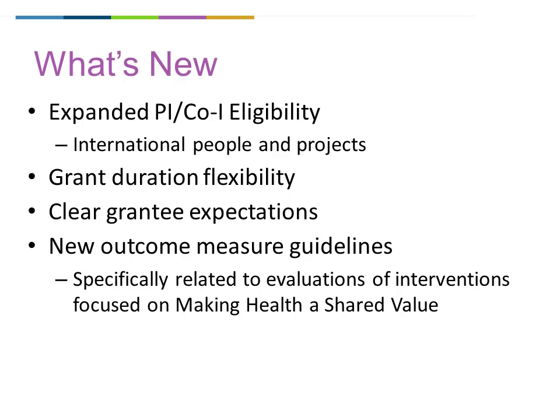Most of what's in our call for proposals is consistent with what we've been soliciting over the last few years. But let's talk about the few new provisions. For the first time, we are allowing research teams that include international members. Proposed research teams may be composed of both U.S. and international members, including the principal investigator, co-PI, co-investigators, and other team members, as long as the lead applicant organization is based in the U.S. or its territories. We are also willing to consider research conducted outside of the United States that demonstrates clear relevance and applicability to building a culture of health in the U.S. We've also gotten a little more flexible with grant durations — our preference is still to fund projects that can demonstrate findings in the near term, 36 months or shorter, but we will now consider applications for 48-month durations with sufficient justification.